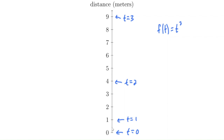In that first one second, it only traveled one meter. But in the second second, between t equals one and t equals two, it traveled three meters. Between t equals two and t equals three, it traveled five meters. So the car appears to be speeding up — it's accelerating.